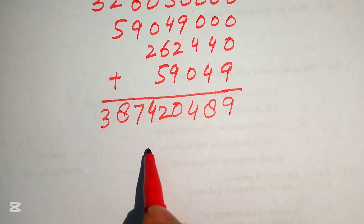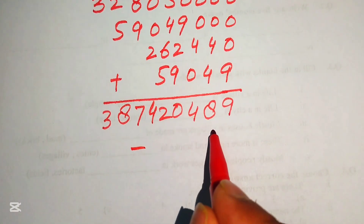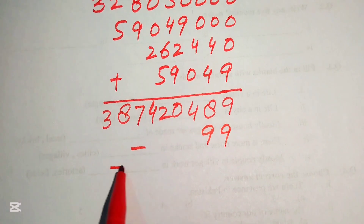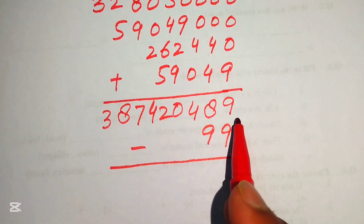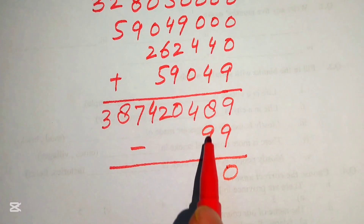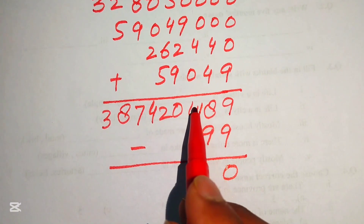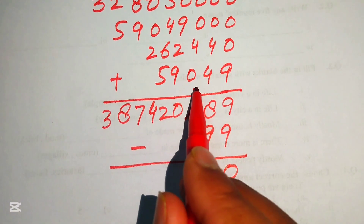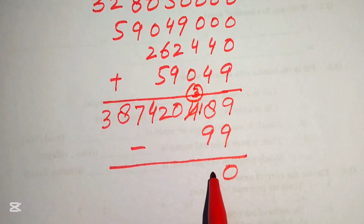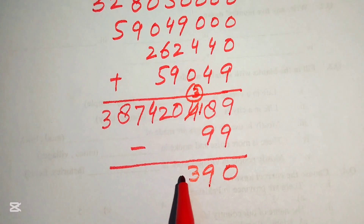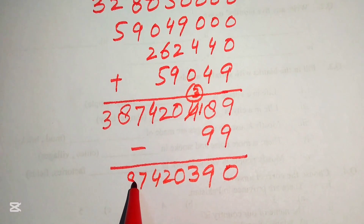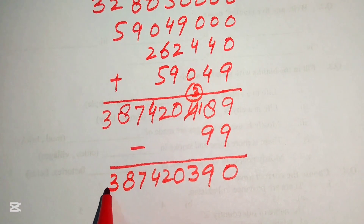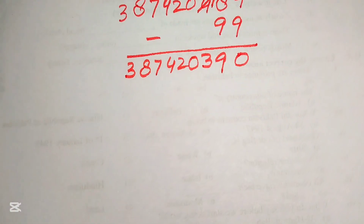Now we subtract 99 from this result. 9 minus 9 is 0; 8 minus 9 requires borrowing, giving 18 minus 9 equals 9. After completing the subtraction we get 387,420,390.